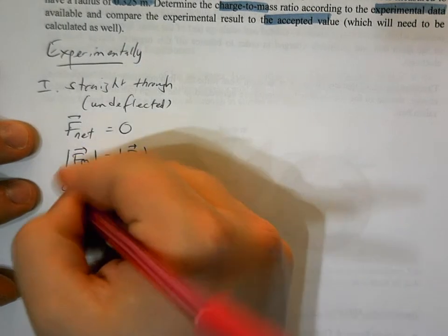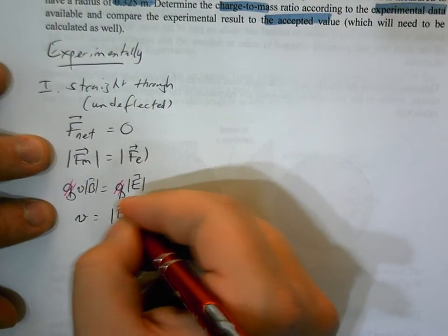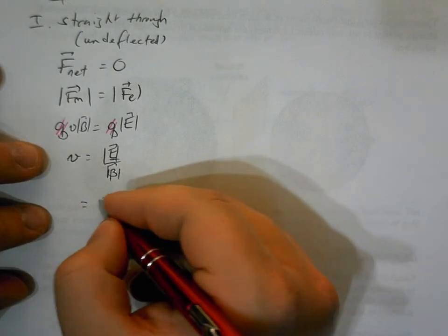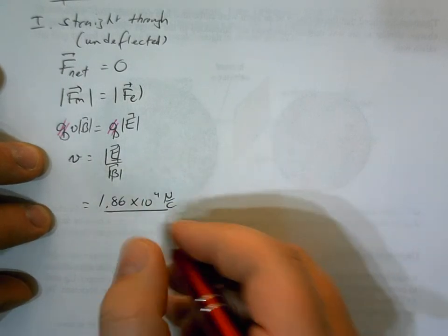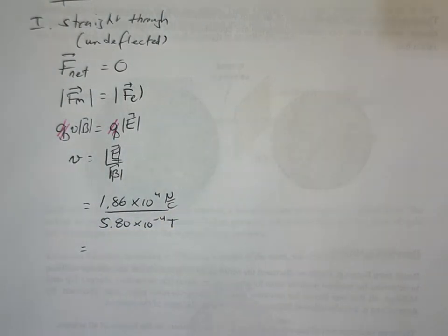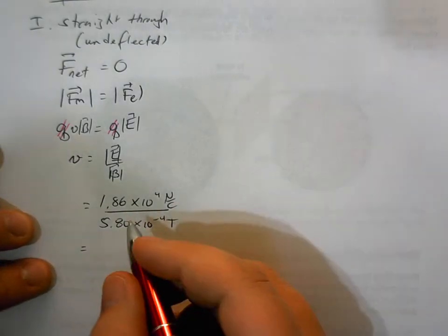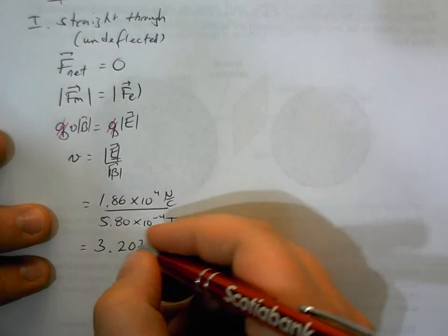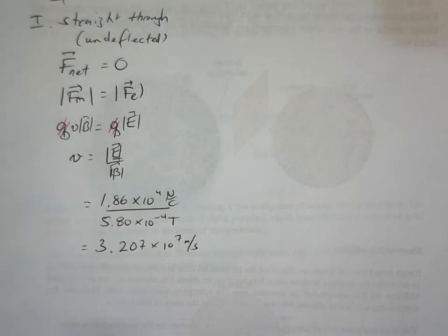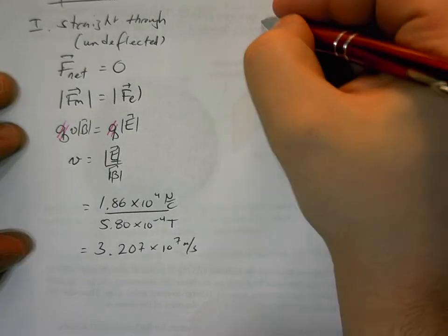First, since the particle is undeflected, the net force is zero — the magnetic force balances the electric force: qvB = qE. Charge cancels, so v = E/B. The speed of the particle is the electric field strength divided by the magnetic field strength, giving approximately 3.207 × 10⁷ m/s. This is the speed as the particle passes through the velocity selector.